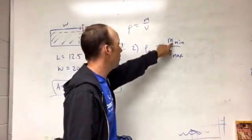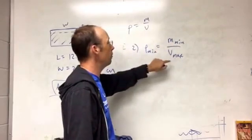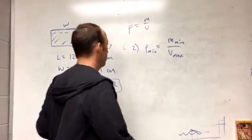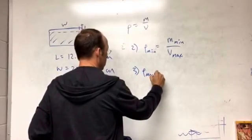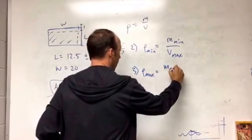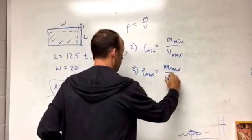And then the maximum density would be the maximum mass divided by the minimum volume.